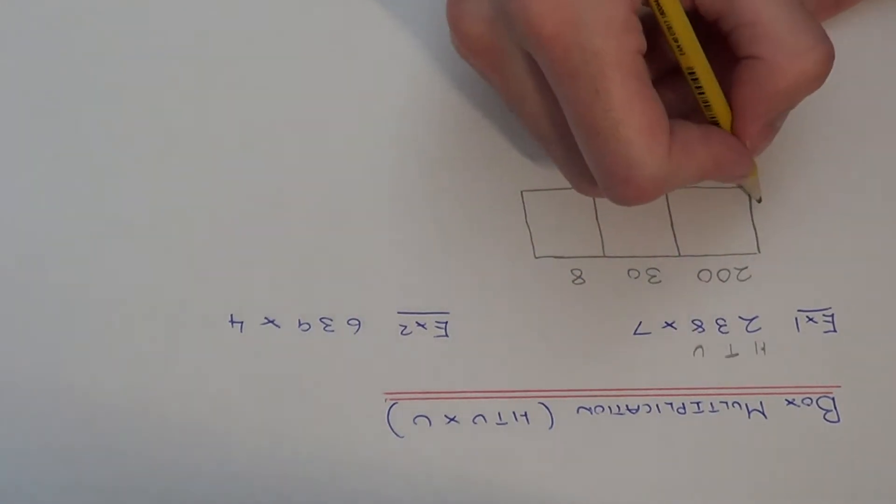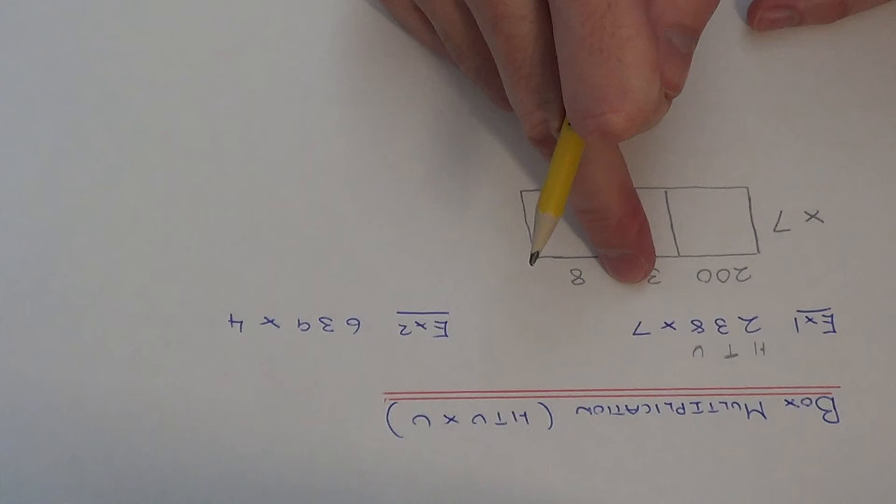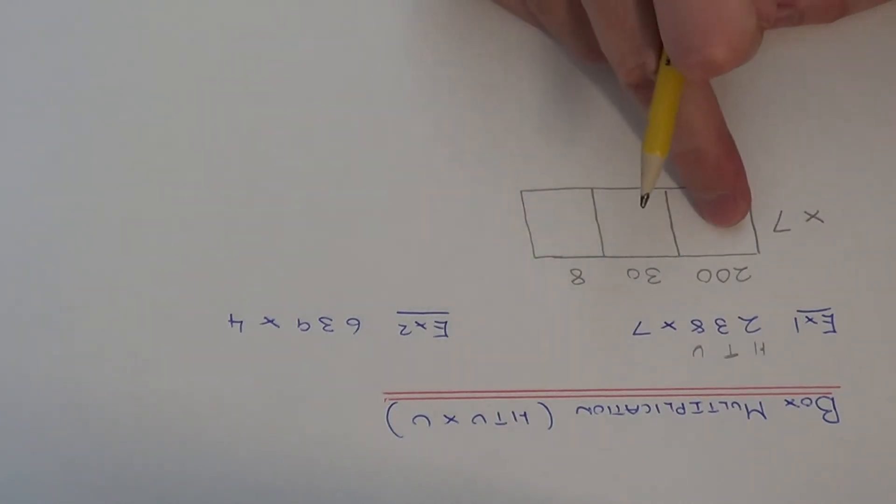And the number we're multiplying by is 7, so write this at the side. We now need to work out 200 times 7, 30 times 7, and 8 times 7, and write each answer in the three boxes.